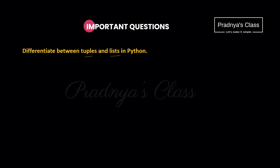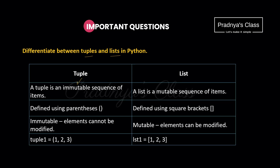Here is another important theory question: differentiate between tuple and list. For two marks, try to write four differences. Tuple is immutable whereas list is mutable. Tuple elements are enclosed in round brackets, list uses square brackets. Because tuple is immutable we cannot modify elements, while for list we can. Include a simple example of creating each.